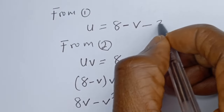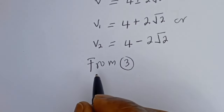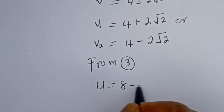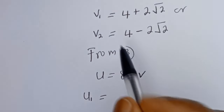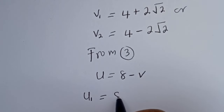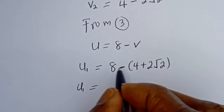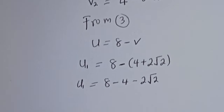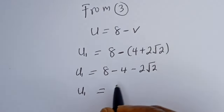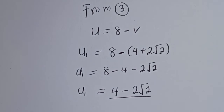For U1: U1 is equal to 8 minus V1, which is 4 plus 2 root 2. So U1 equals 8 minus 4 minus 2 root 2, which gives U1 equal to 4 minus 2 root 2.